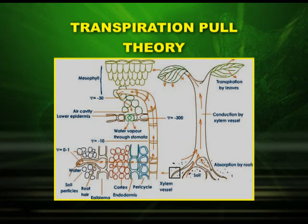The following diagram very well explains the transpiration pull theory. You can see the absorption and correspondingly the transpiration. Transpiration helps in the absorption of water into the root. In the diagram, you can see the water absorbed by the root hairs and moving up into the mesophyll of the leaves — transpiration by leaves helps in the absorption at the roots. This important phenomenon is transpiration.